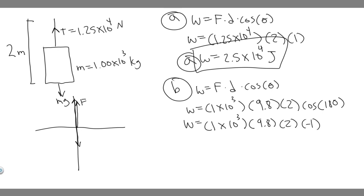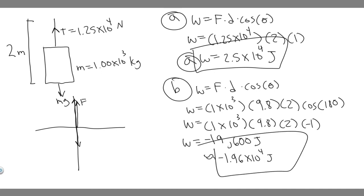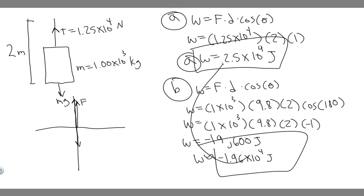So multiplying it out: 1 times 10 to the 3, times 9.8, times 2, times negative 1 gives work equal to minus 19,600 joules. In scientific notation that's minus 1.96 times 10 to the 4th joules. So that's the answer to Part B — the work done by the gravitational force on the elevator. Hopefully you found this useful.